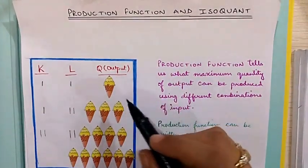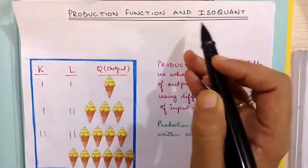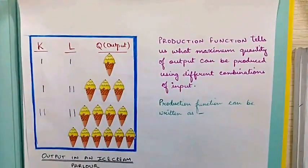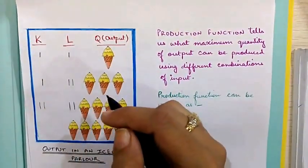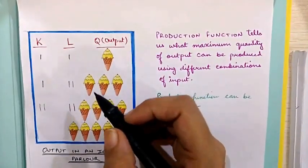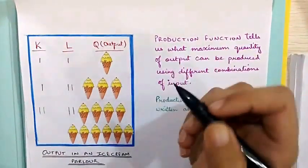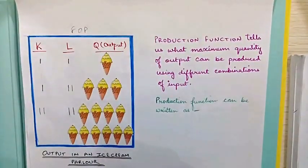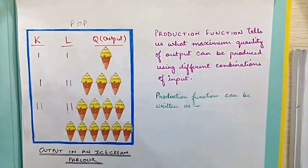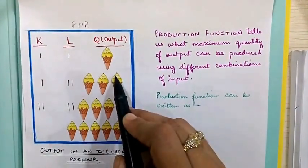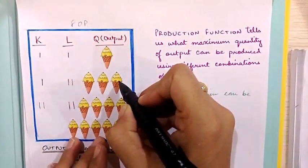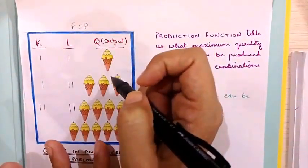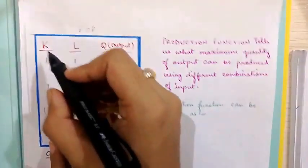In this video we will try to learn about production function and isoquant curves. Let us consider an example of an ice cream parlor to understand the meaning of production function. We know that the inputs a firm requires to produce its output are called factors of production. Here we assume that in this ice cream parlor we use only two factors of production to produce our output, that is ice creams.